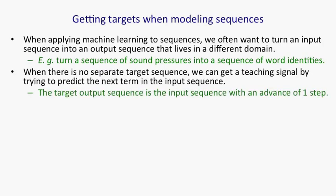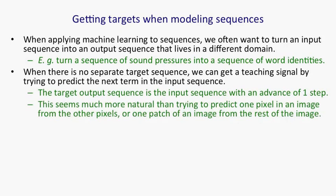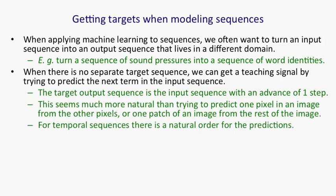Sometimes we don't have a separate target sequence, and in that case we can get a teaching signal by trying to predict the next term in the input sequence. So the target output sequence is simply the input sequence with an advance of one time step. This seems much more natural than trying to predict one pixel in an image from all the other pixels. One reason it probably seems more natural is that for temporal sequences, there's a natural order to do the predictions in, whereas for images it's not clear what you should predict from what. But in fact, a similar approach works very well for images.